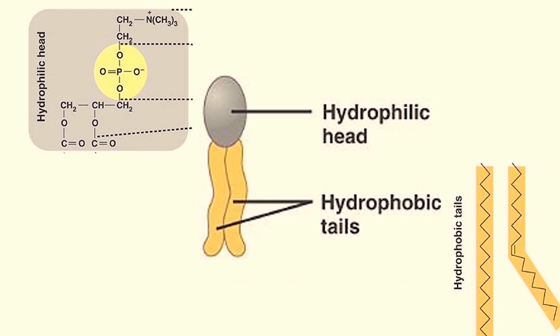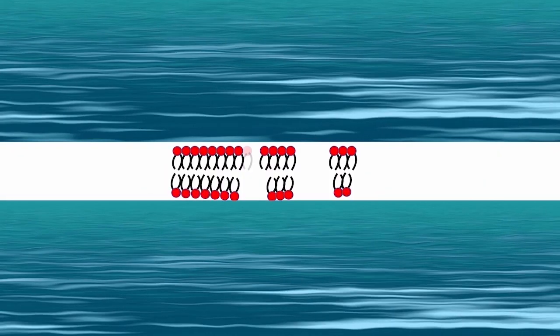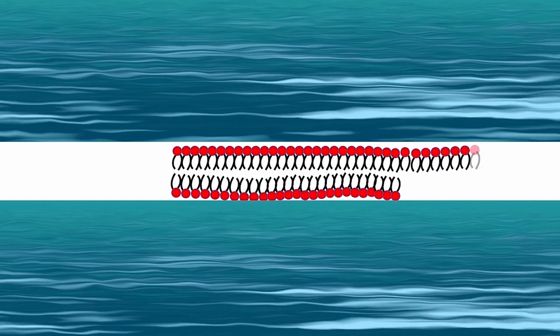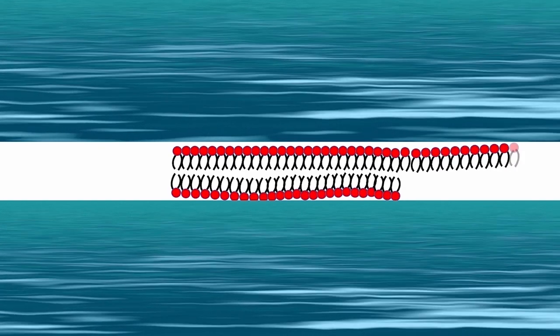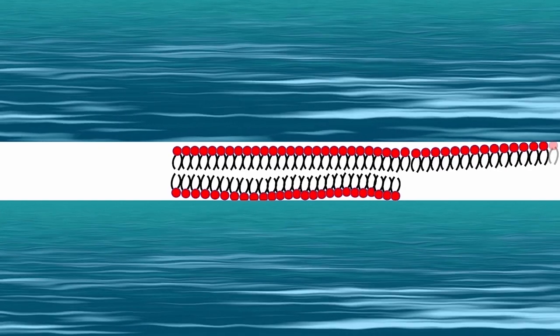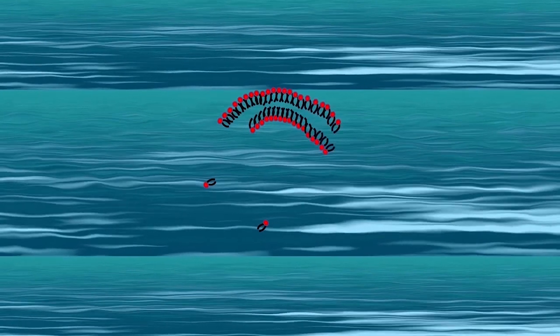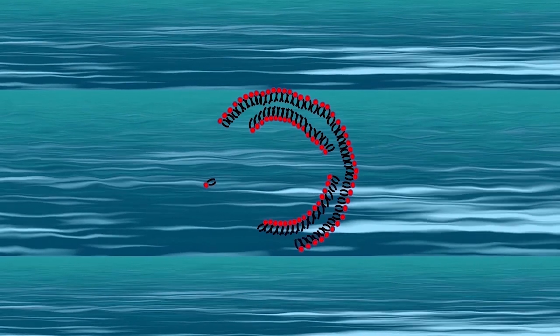Now let's understand the formation of liposomes. Liposomes form through a process called self-assembly. When phospholipids are dispersed in water, they arrange themselves into a bilayer spontaneously. These bilayers can then close up to form closed vessels, encapsulating a small volume of aqueous solution inside.